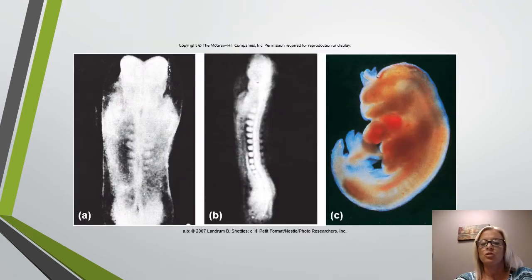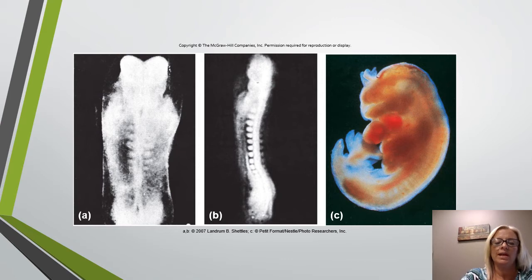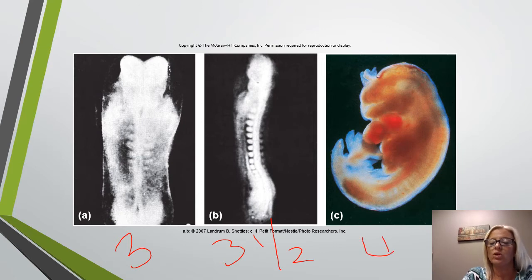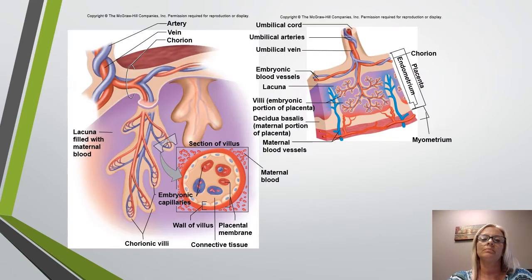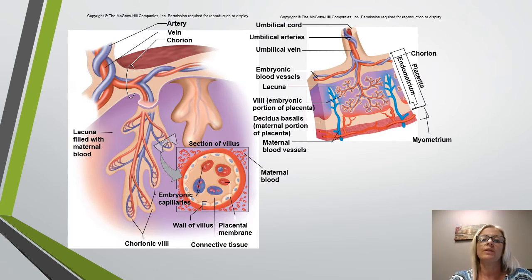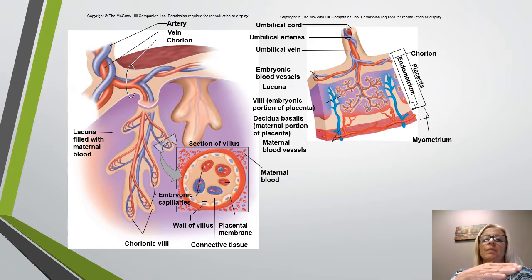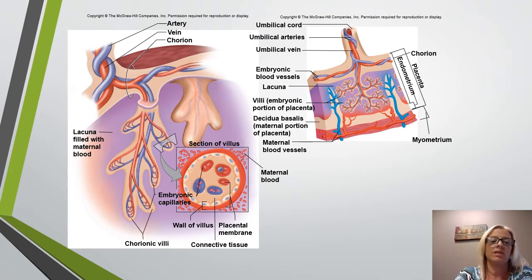The amniochorionic membrane is going to form because of the fusion of the chorion and the amnion — hence the name amniochorionic. Here you can see a pretty quick development of the human embryo: in A, this is three weeks; B is three and a half weeks; and just one week later, C is four weeks. The placental membrane has an endothelium of an embryonic capillary and an epithelial wall of chorionic villus, shown here.